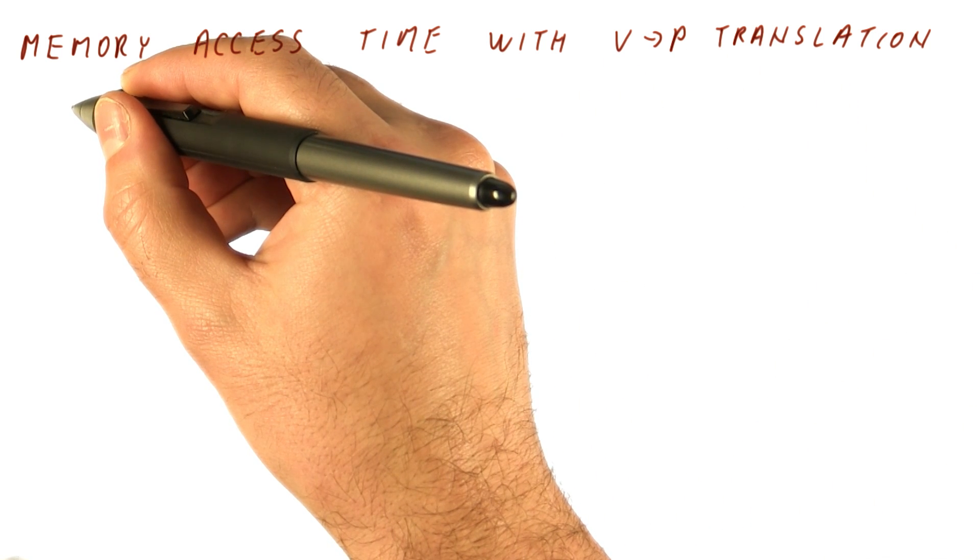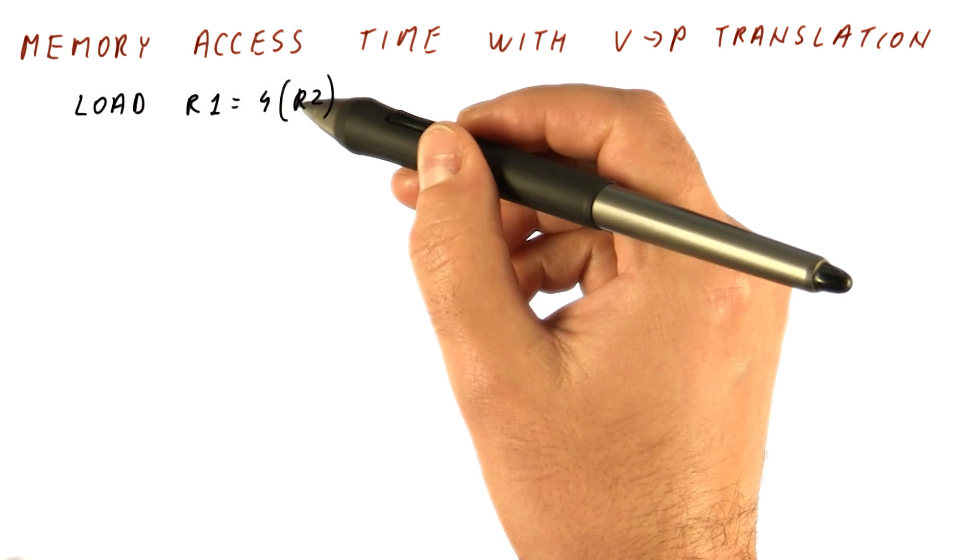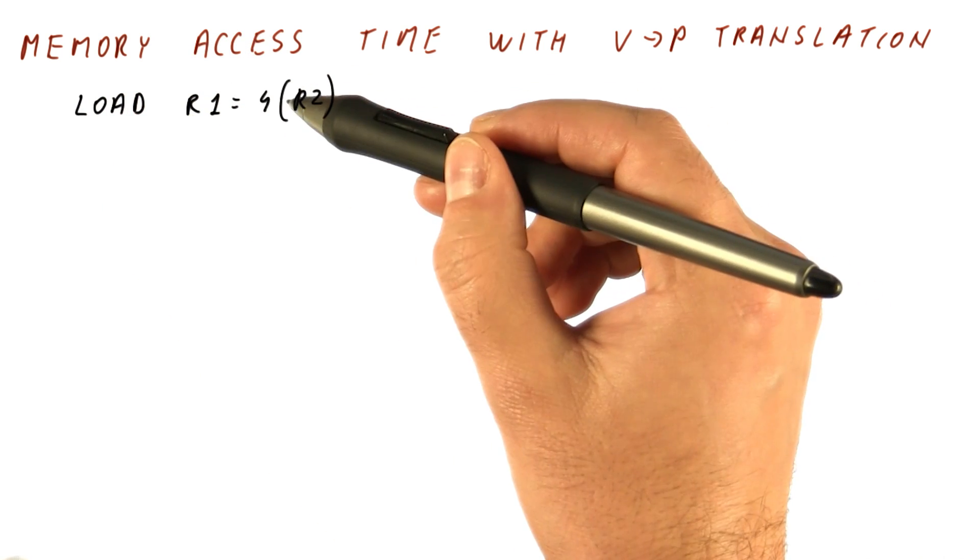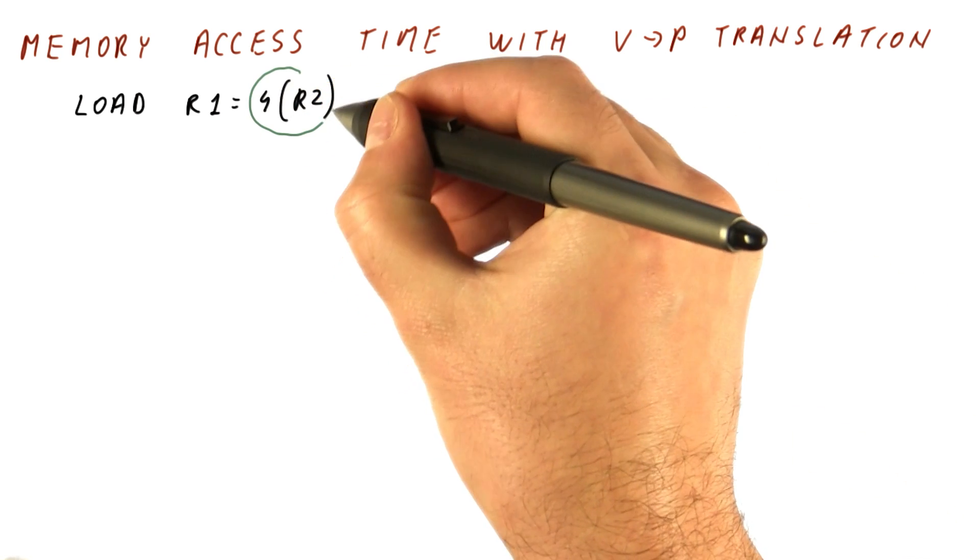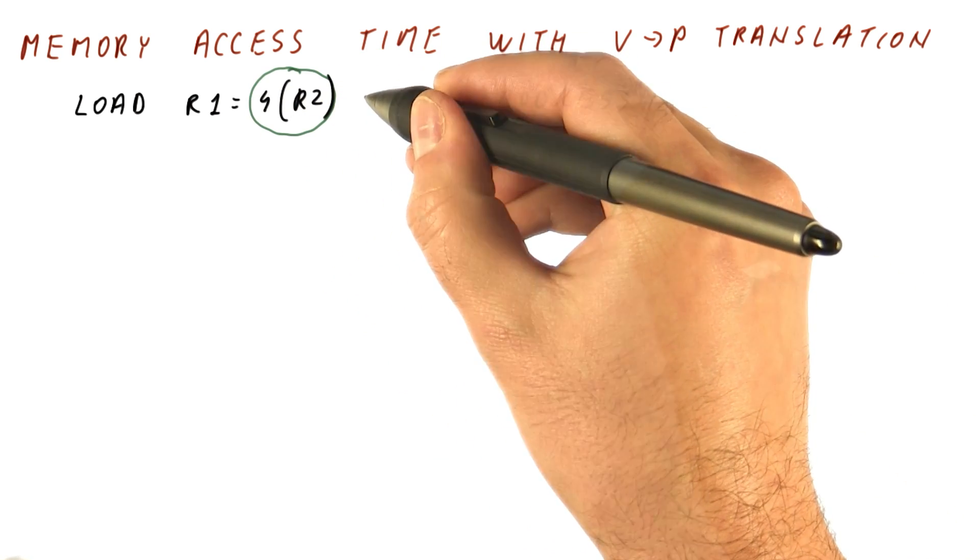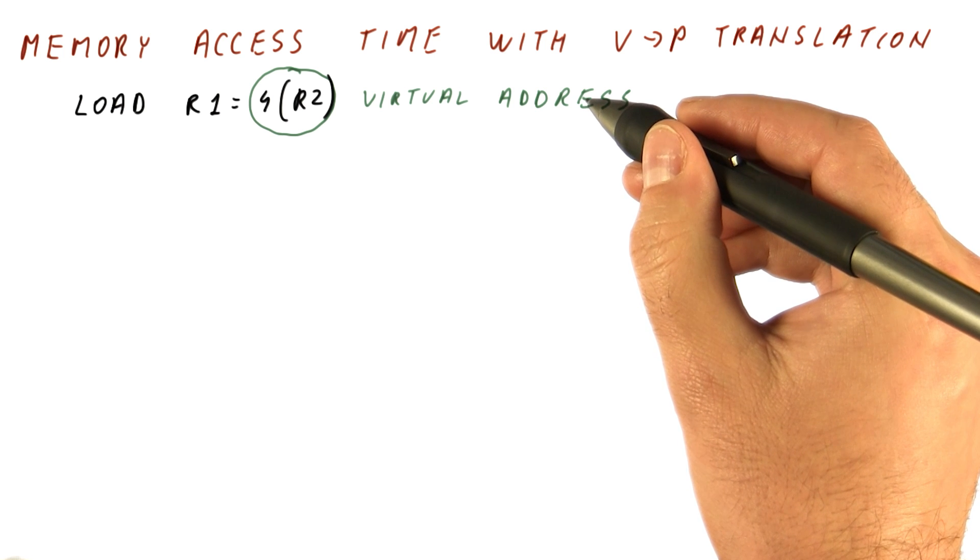So our program does something like this. It says load R1 from the address computed by adding 4 to what is in R2. This, when computed, will be the virtual address that we want to access in the program.